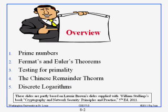We talk about prime numbers, Fermat's and Euler's theorem, then testing for primality, Chinese remainder theorem and discrete logarithms, because all of these are required for the public key.